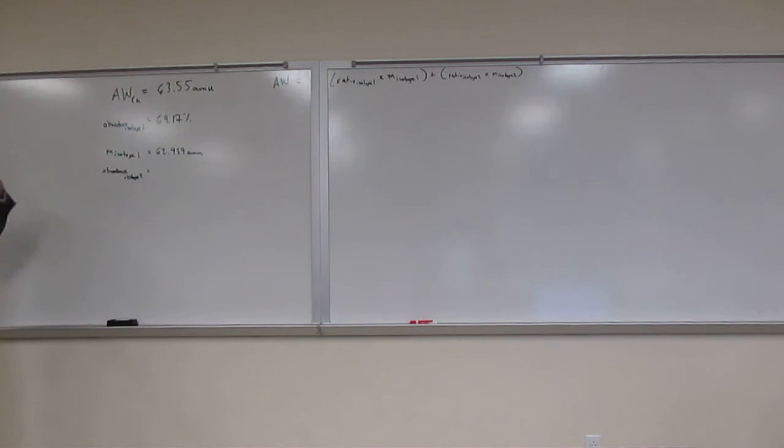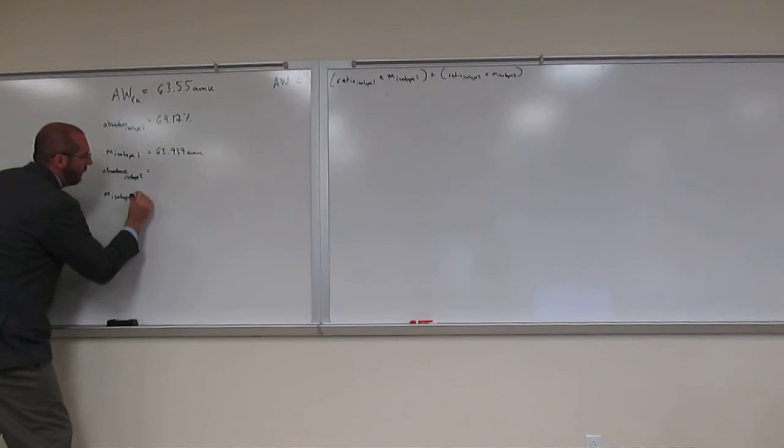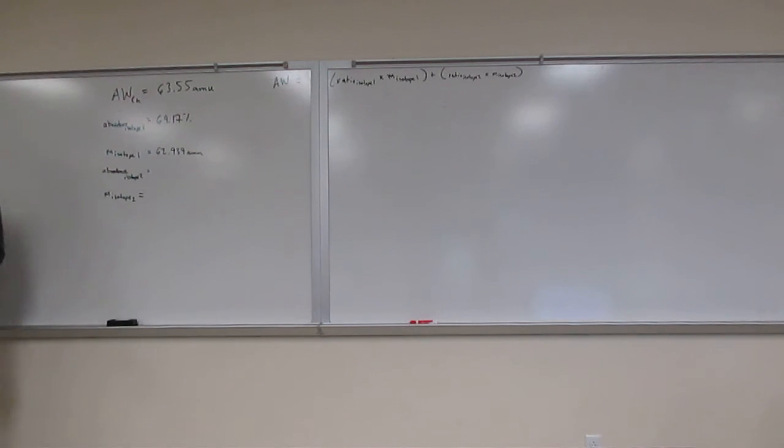Notice also it didn't give us the abundance of isotope 2. What are we really looking for? We're looking for the mass of isotope 2. And we couldn't find that if we didn't know the abundance. So how do we do that first?